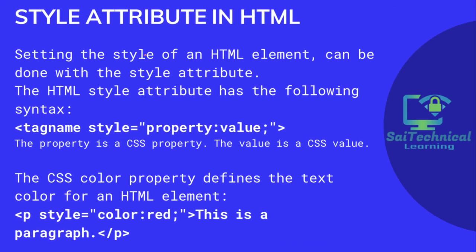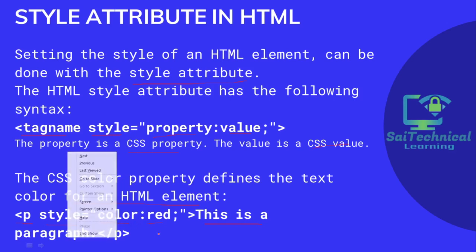Style attributes in HTML: setting the style attribute of HTML elements is done with the style attribute, which has the syntax: element name, then the style attribute, then a CSS property followed by its value. For example, the CSS color property defines the text color. So a p tag with style='color:red' will display the paragraph text in red color.